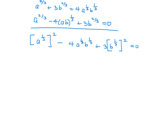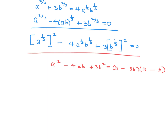This is factorable. If it's not entirely obvious, think of it like a² − 4ab + 3b² — you'd factor that as (a − b)(a − 3b). The same principle applies here: (a^(1/3) − b^(1/3))(a^(1/3) − 3b^(1/3)) = 0.